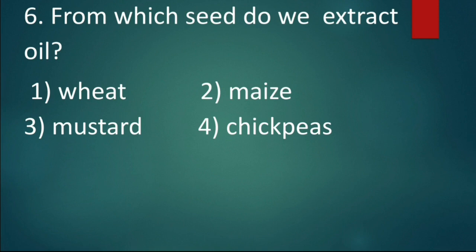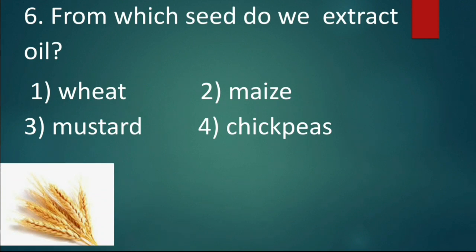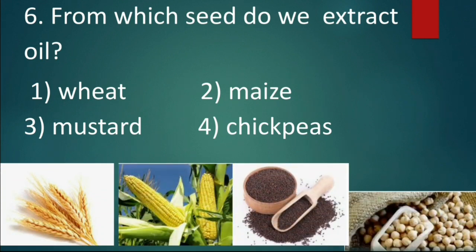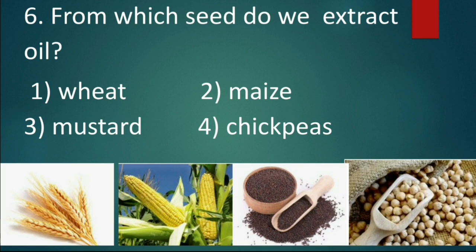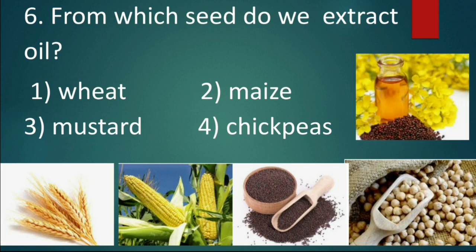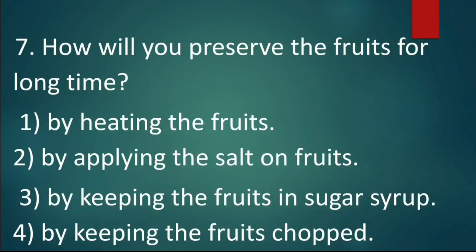Question number six: From which seed do we extract oil? Options: wheat, maize, mustard, or chickpeas. Kids, wheat, maize, and chickpeas are seeds but we get oil from mustard. Hence mustard is the seed from which we extract oil. The answer is option three: mustard.